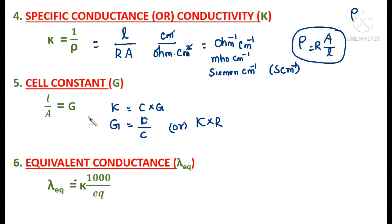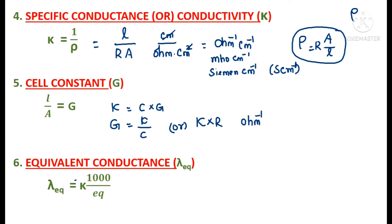If you need to find the cell constant and are given specific conductance and resistance, use G = κ × R. If specific conductance and conductance are given, use G = κ / conductance. To find the unit: κ has unit ohm⁻¹·cm⁻¹, R has unit ohm. The ohm terms cancel, leaving the unit for cell constant as cm⁻¹. These units are important — objective-type questions are possible from this topic.